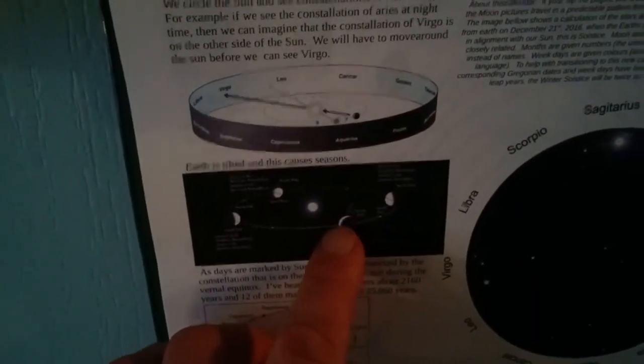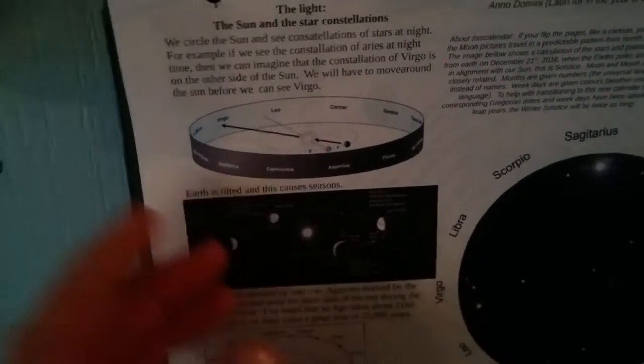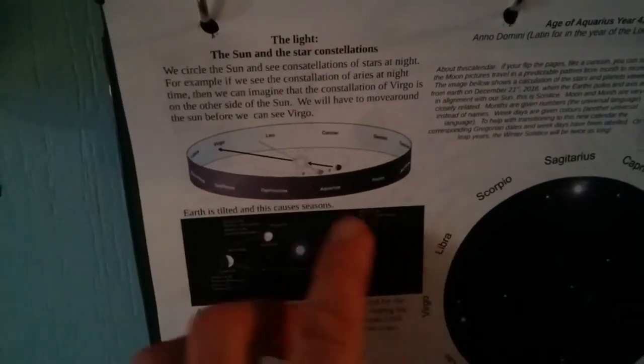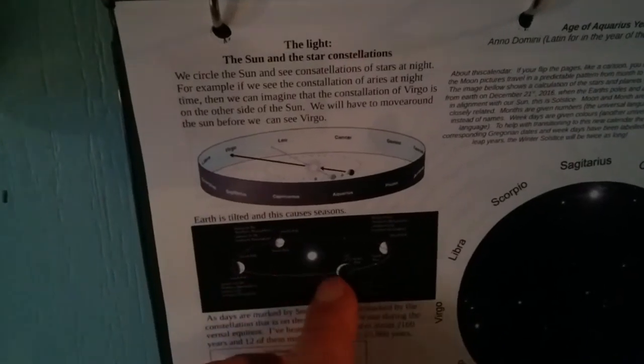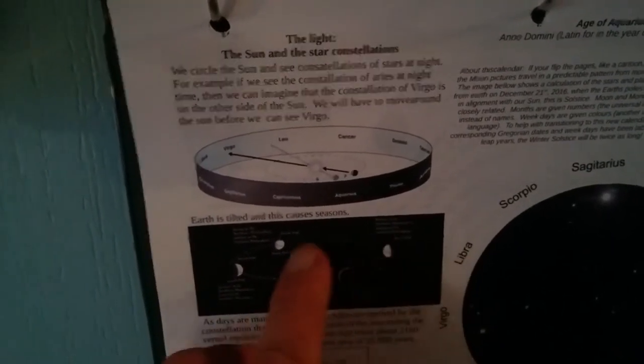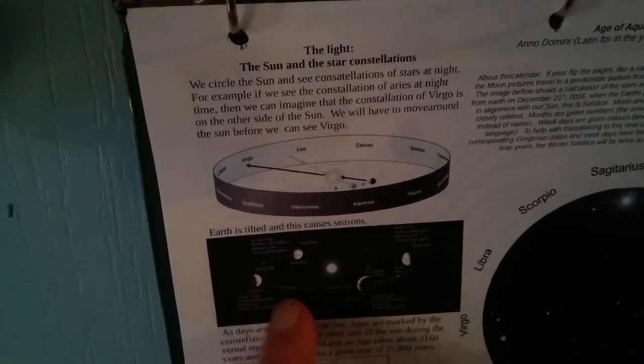It talks about the seasons and how they work, how the Earth is tilted on a little bit of an angle as it travels around the Sun. And that's why in the Northern and Southern Hemisphere we experience different seasons.